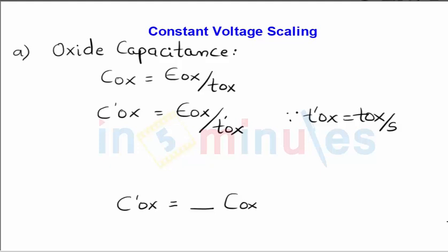In the previous clip, we identified the drawbacks of constant field scaling. We understood that because of the need for level shifters and voltage translators, full scaling or constant field scaling is not a very good idea, though it had its own advantages as well.